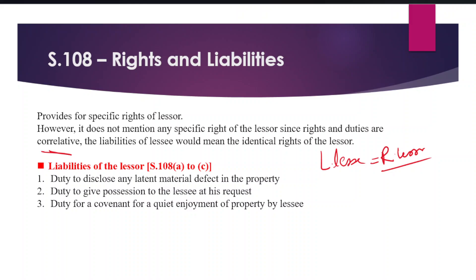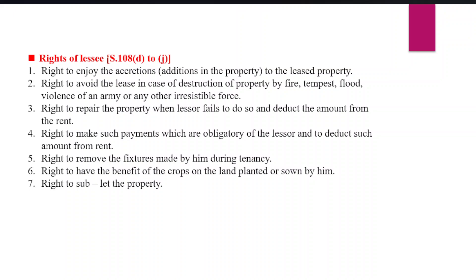These are the liabilities of the lessor. Moving on to the rights of the lessee, found in clause J onwards. First is the right to enjoy accretions — accretions means additions to the leased property. Second is the right to avoid the lease in case of destruction — such as fire, tempest, flood, violence of an army, or any other irresistible force.